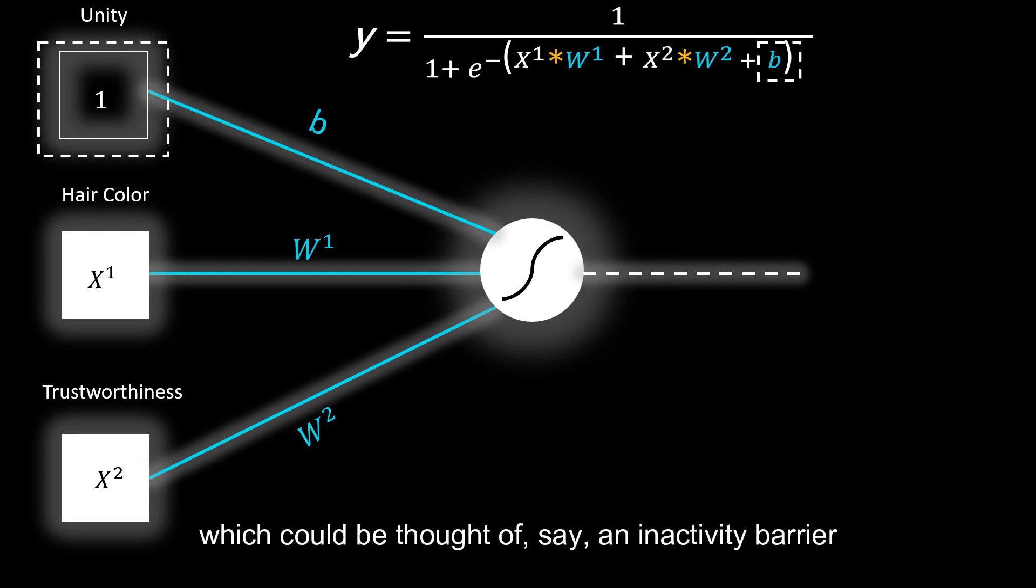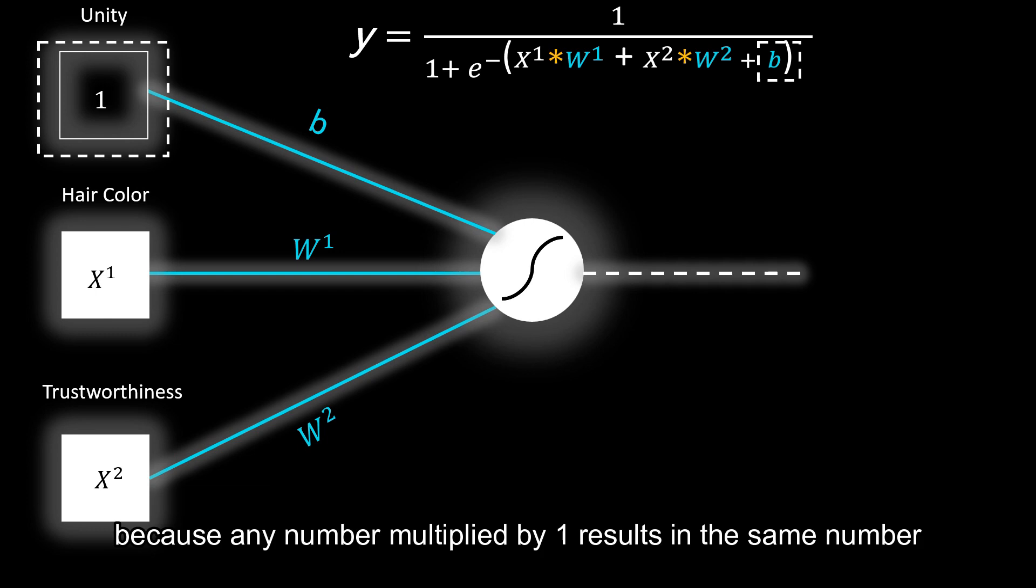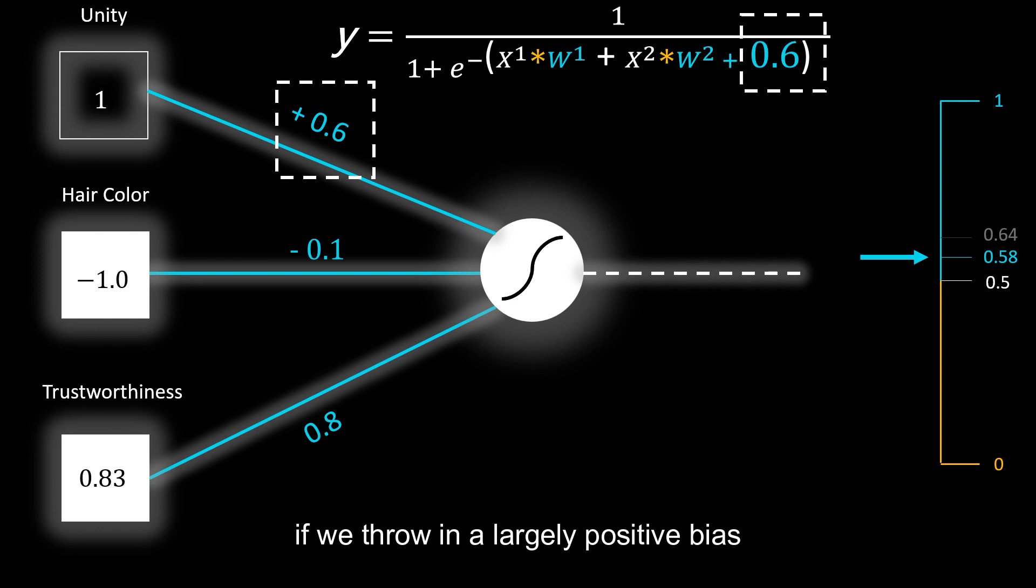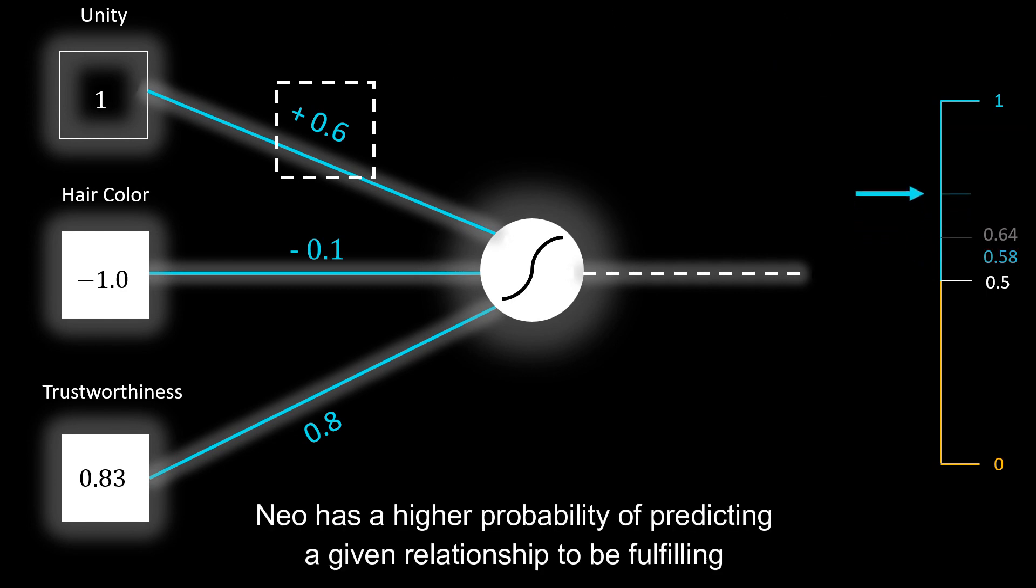Now there is one final detail to this equation: the bias, which could be thought of as an inactivity barrier. Note how bias is essentially a weight which takes no input, because any number multiplied by one results in the same number. If the bias is slightly negative, the probability is reduced, having an impact of making Neil a bit more picky. On the other hand, if we throw in a largely positive bias, Neil has a higher probability of predicting a given relationship to be fulfilling and being more open to potential mates.